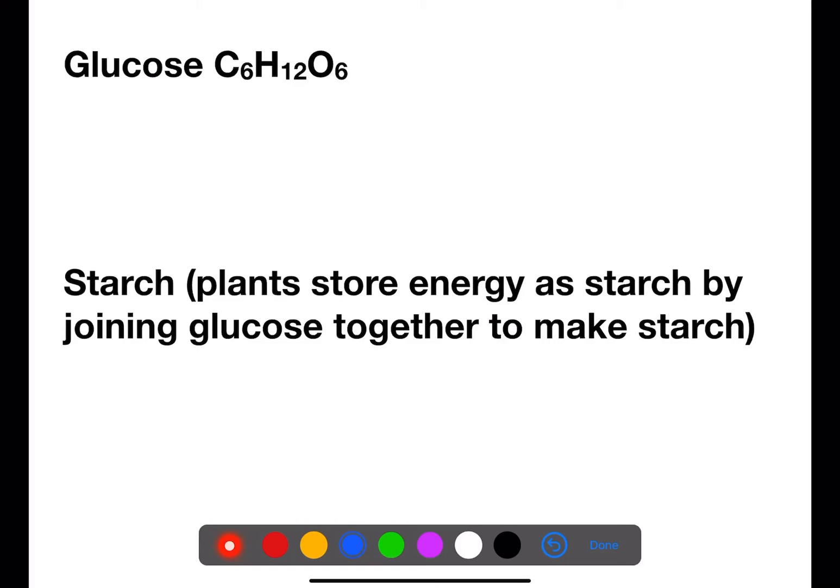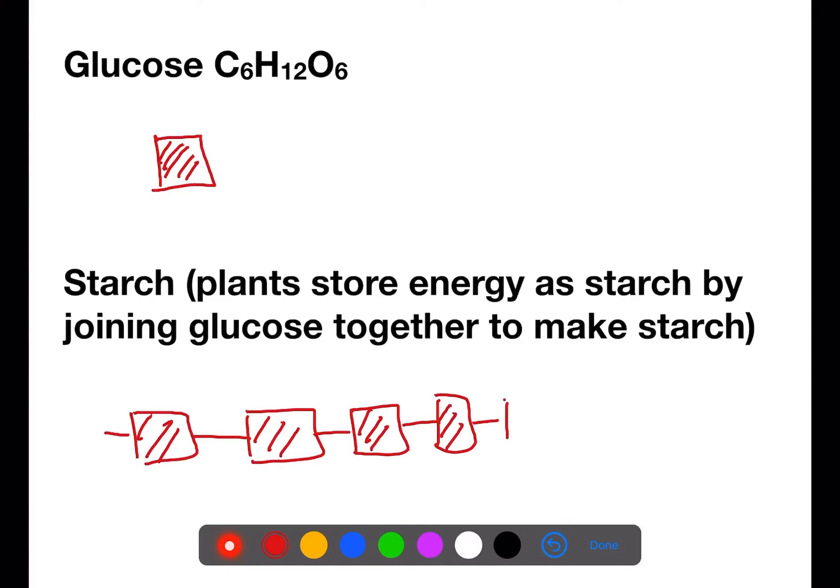A simple carbohydrate would be glucose which has the formula C6H12O6. Starch is a complex carbohydrate which is formed in plants by joining glucose molecules together. We can represent this as a box for a glucose molecule. And if we join a number of these together we get a long chain complex carbohydrate which is starch.